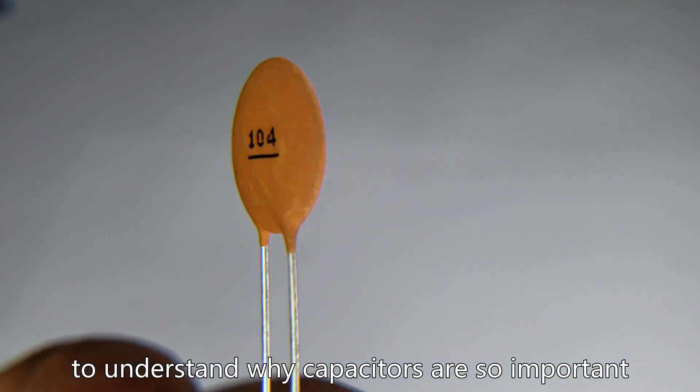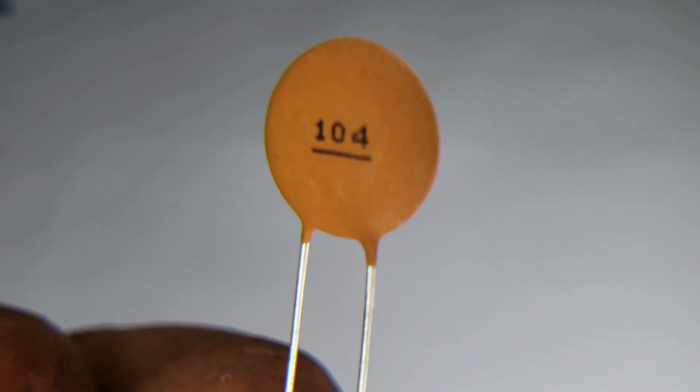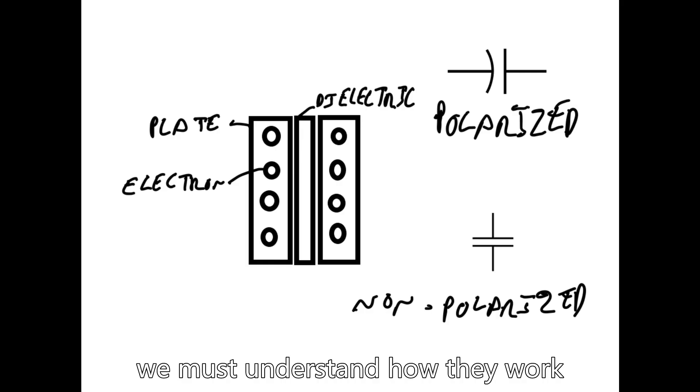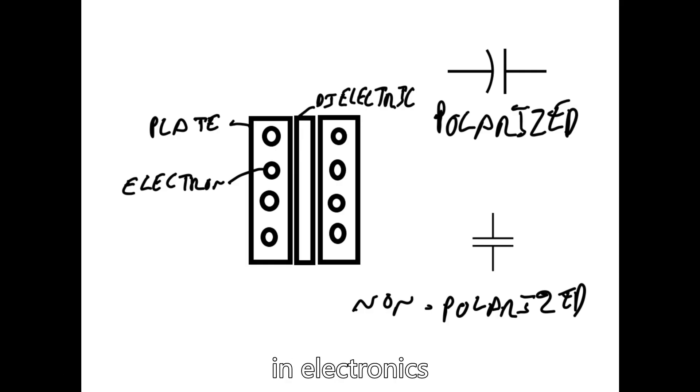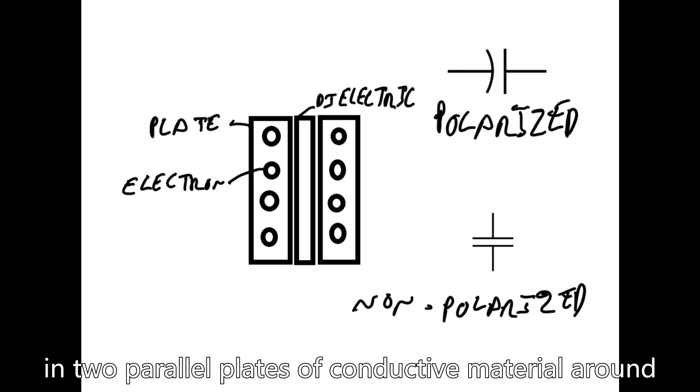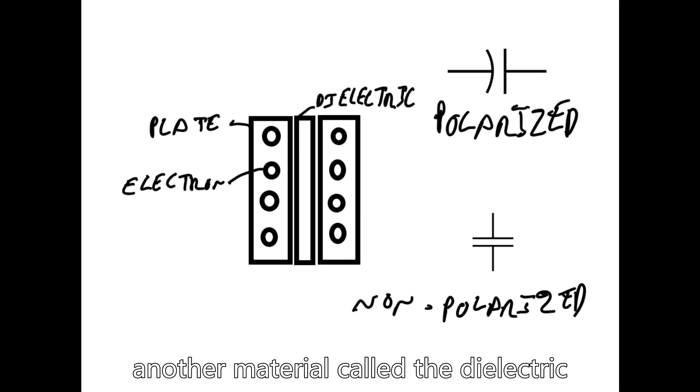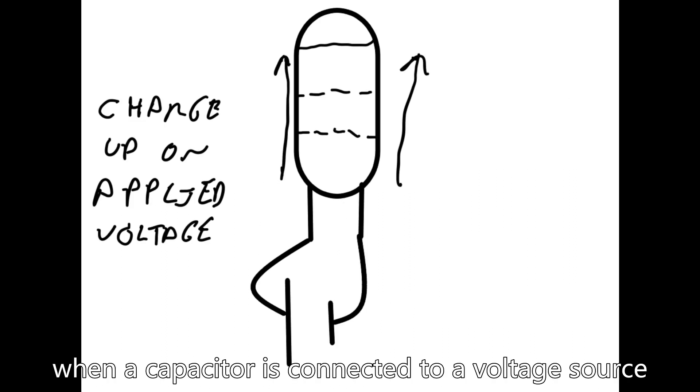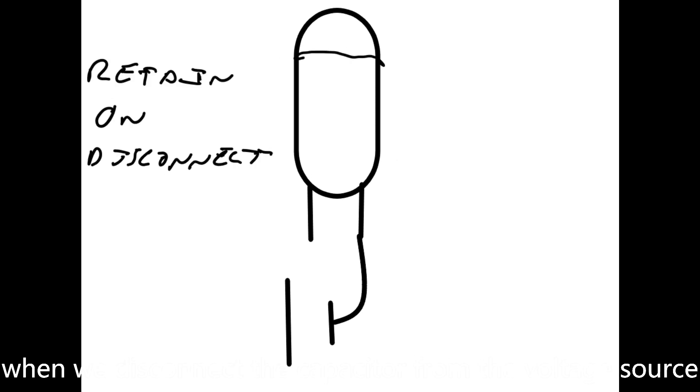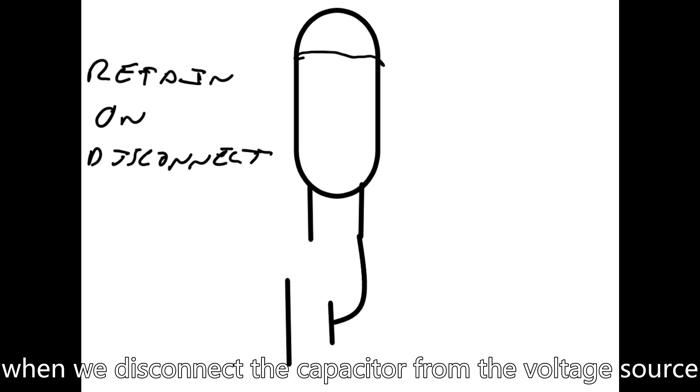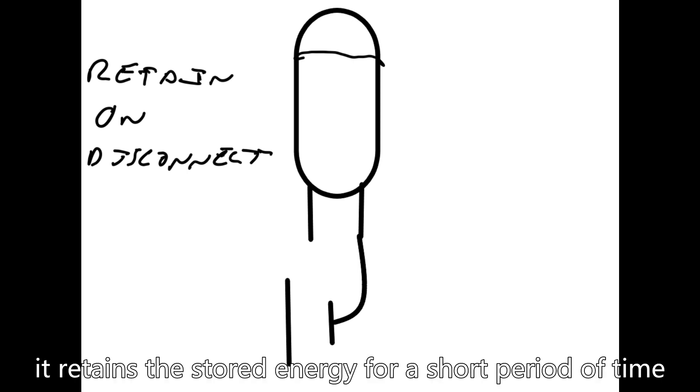To understand why capacitors are so important to our circuits, we must understand how they work. Capacitors are considered a type of storage tank in electronics. Capacitors work by storing energy in two parallel plates of conductive material around another material called a dielectric. When a capacitor is connected to a voltage source, it charges up and stores electrical energy. When we disconnect the capacitor from the voltage source, it retains stored energy for a short period of time.